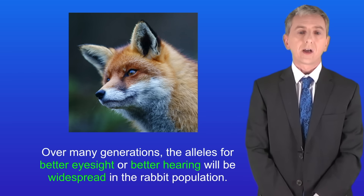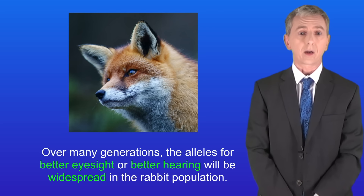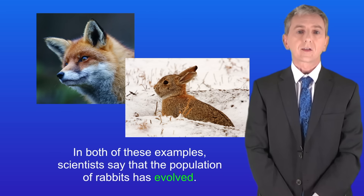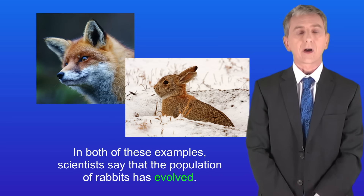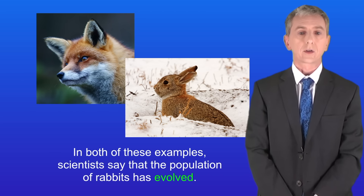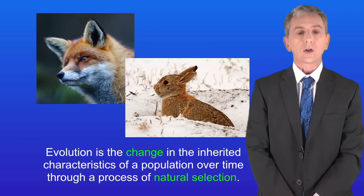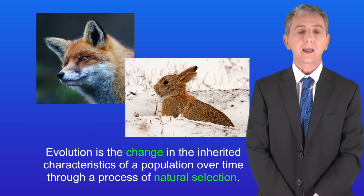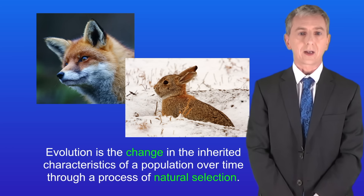Over many generations the alleles for better eyesight or better hearing will be widespread in the rabbit population. In both of these examples scientists say that the population of rabbits has evolved. Evolution is the change in the inherited characteristics of a population over time through a process of natural selection.